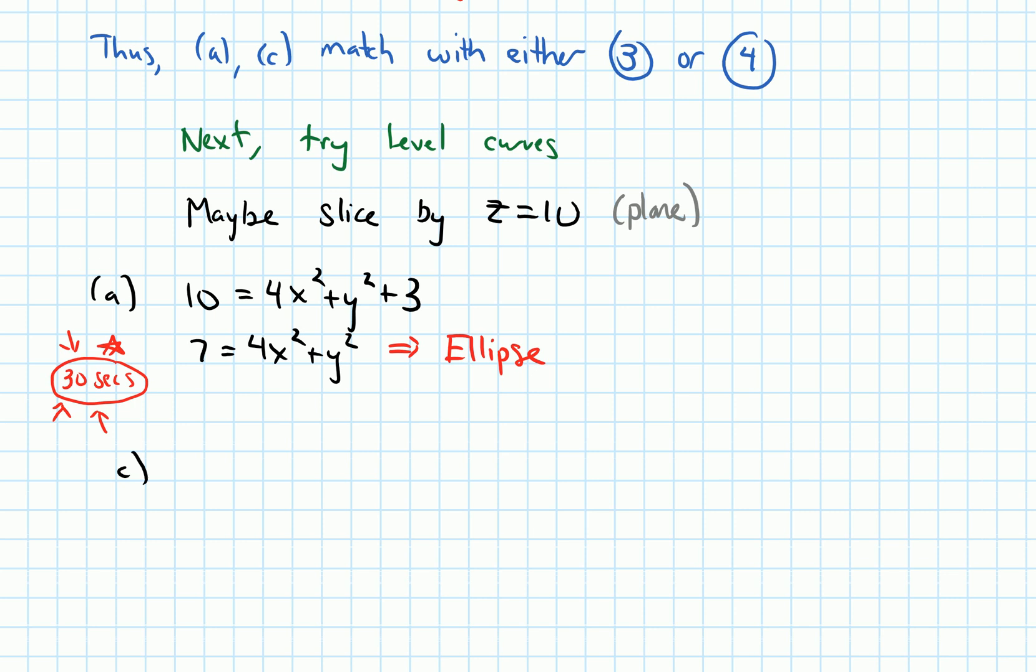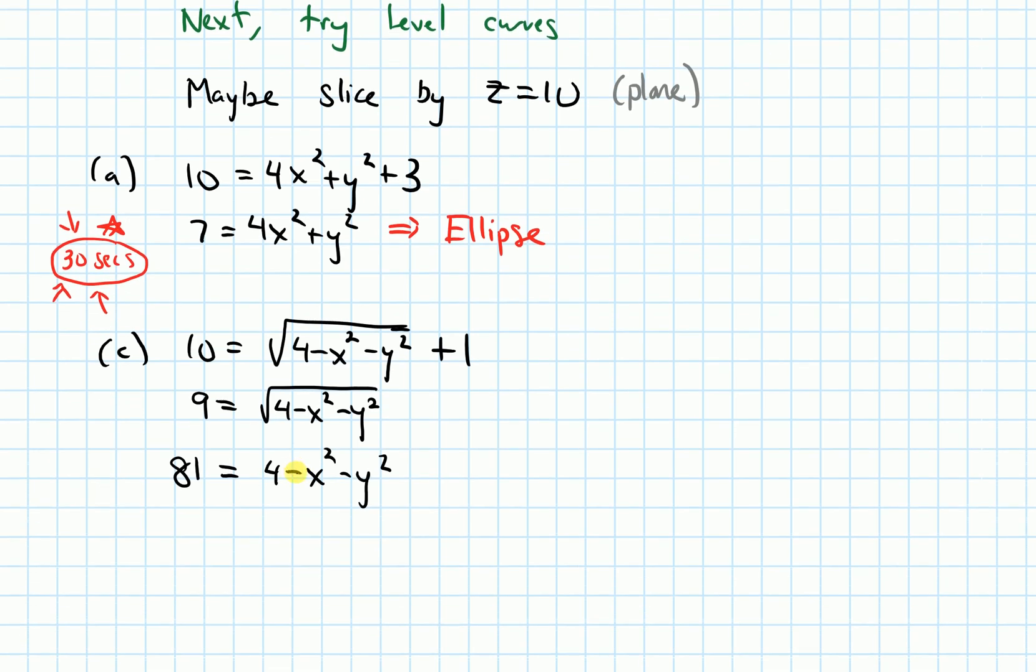Now let's do part c. Let's plug in 10 for z. So we'll get 10 equals the square root of 4 minus x squared minus y squared plus 1. So I can move the 1 over and get 9 equals the square root because we need to isolate the root first. So now I can square both sides. And if I did that, I would get 81 equals 4 minus x squared minus y squared. And as before, let's get all the variables on one side first. So let's move the variables to the left. So they become positive x squared plus y squared. And then I'll move 81 to the right to get negative 77.